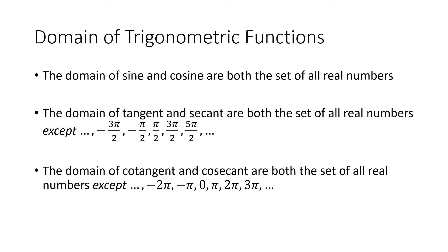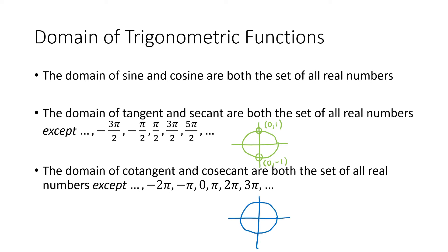So the domain of sine and cosine is the set of all real numbers. The domain of tangent and secant is all real numbers except angles that land on the y-axis — the points to avoid are (0, 1) and (0, -1) on the unit circle. For cotangent and cosecant, the points to avoid are (1, 0) and (-1, 0), the points on the x-axis where those functions would involve dividing by zero.